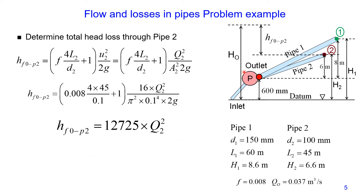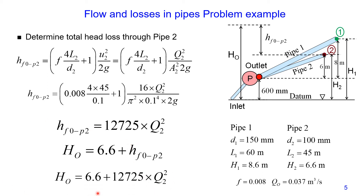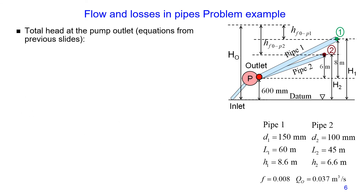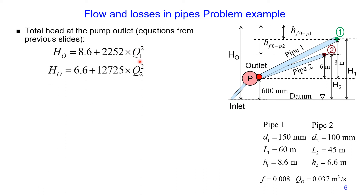From Bernoulli's equation, the total head at the outlet equals the total head at point number two plus all head losses along pipe number two. So we can express the total head at the outlet as: H_O = 6.6 + 12,725 × q2². We now have two expressions: H_O = 8.6 + 2252 × q1², and H_O = 6.6 + 12,725 × q2².